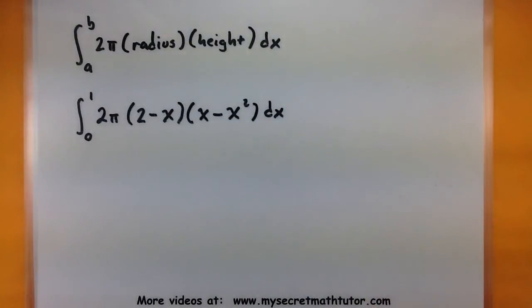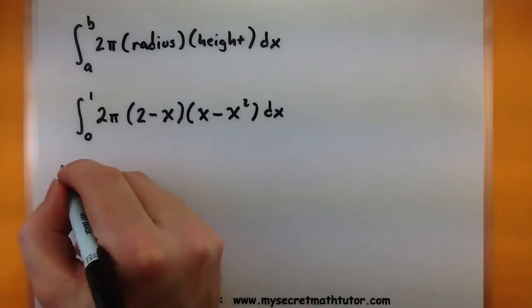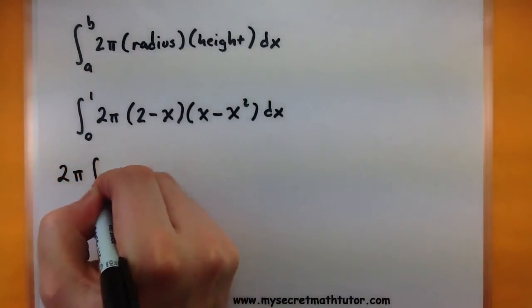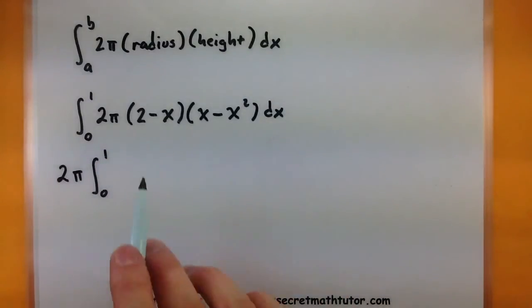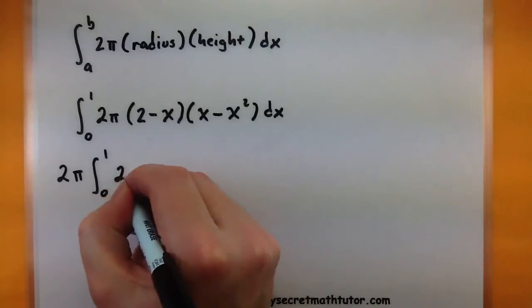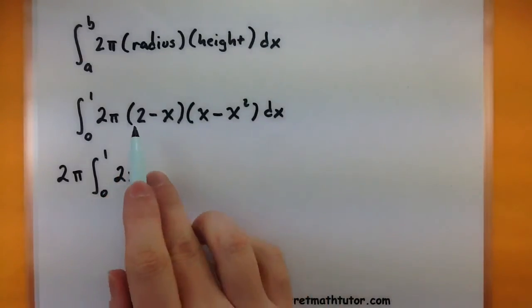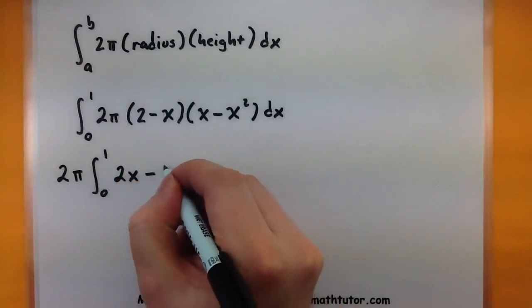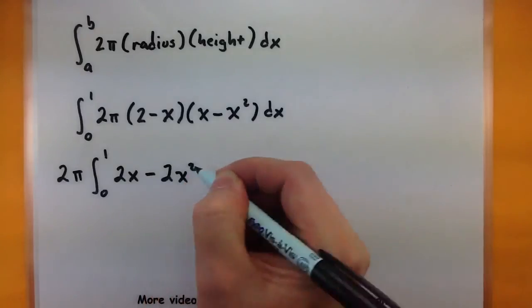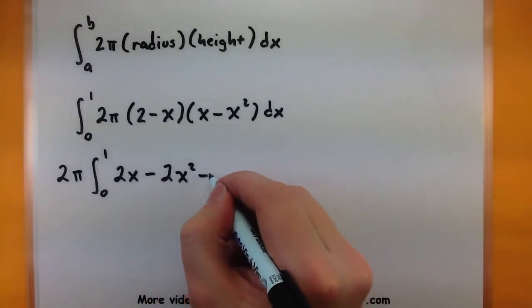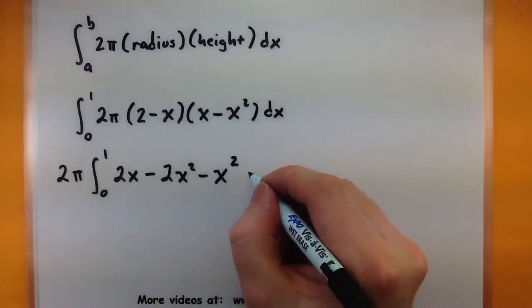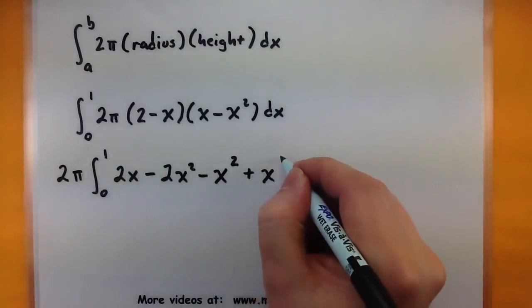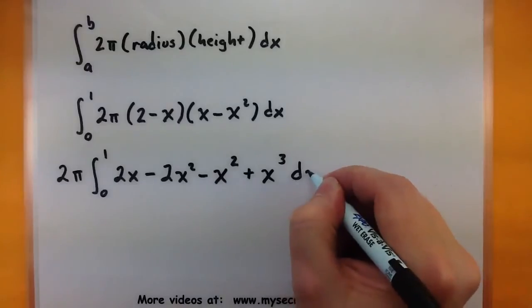Alright, we have our integral. Let's just go ahead and compute it now. Start off by kicking out any constants you might have. And it looks like we're going to have to FOIL this out. So 2 times x, 2x. Outside terms, minus 2x squared. Inside terms, minus x squared. And last terms, plus x cubed dx.